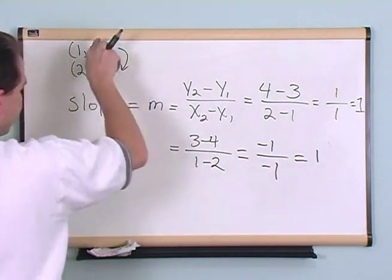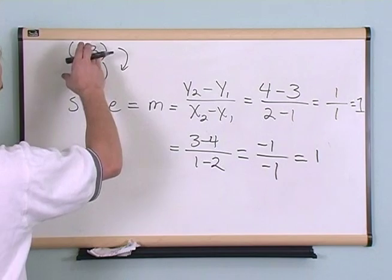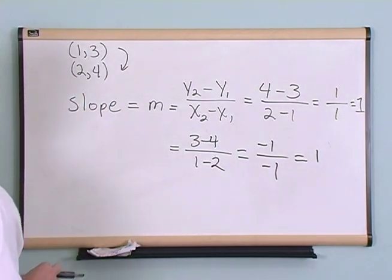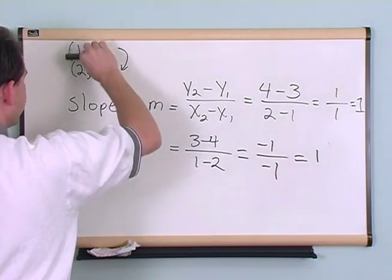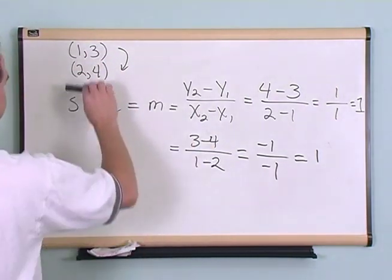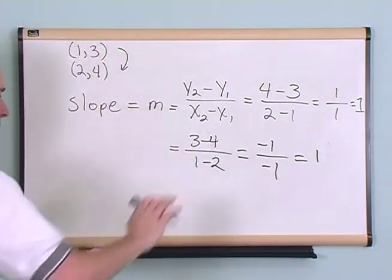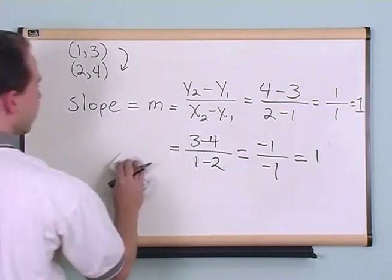You just have to make sure that whichever point you're starting from, you start from the same way when you subtract on the bottom. So if you go from this point, subtract these numbers, that's fine. Do it that way. But if you start at this point, subtract these numbers, that's fine. You can do it that way as long as you're consistent.